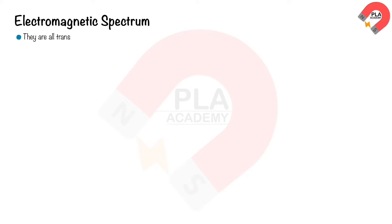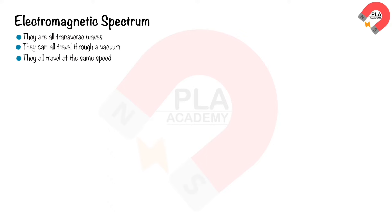Electromagnetic spectrum. All electromagnetic waves have the following properties: they are all transverse waves; they can all travel through a vacuum; they all travel at the same speed in a vacuum, which is 3 × 10⁸ meters per second, approximately the same in air.